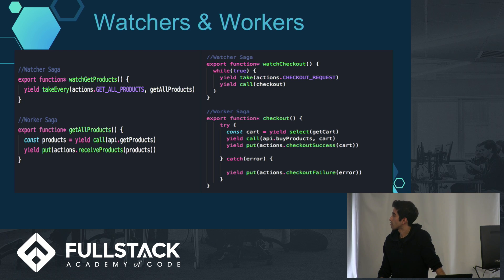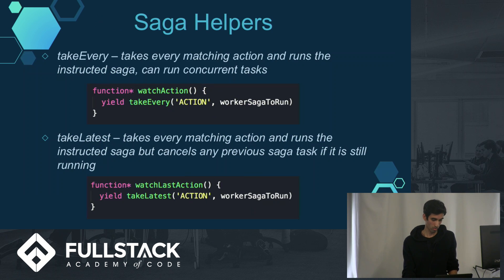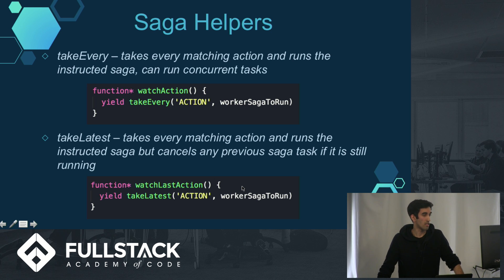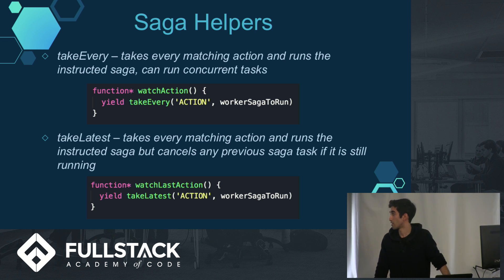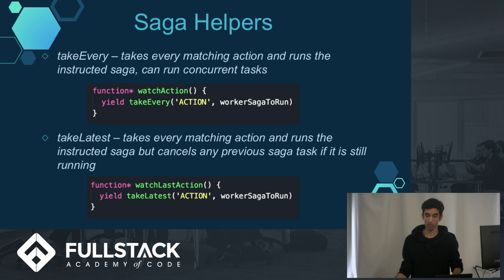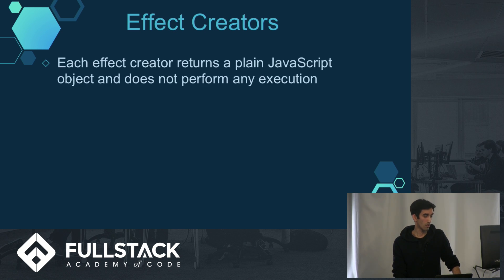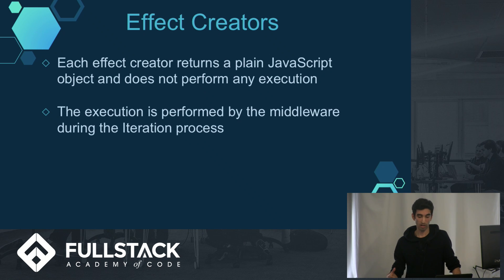This is why I like Redux Saga — you get a clean flow of exactly what's going on, and it's simpler to understand. You can see that anytime there's a checkout request, you can go to your worker saga and see exactly what you're doing. takeEvery basically means do this worker saga every time this action comes in, and takeLatest does the same except that if subsequent requests come in on that same action, it'll cancel the prior ones. The effect creators like call, put, and take return plain JavaScript objects, but given to the middleware they're like instructions, and the middleware is where the actual iteration happens — it examines each effect description and performs the appropriate action.